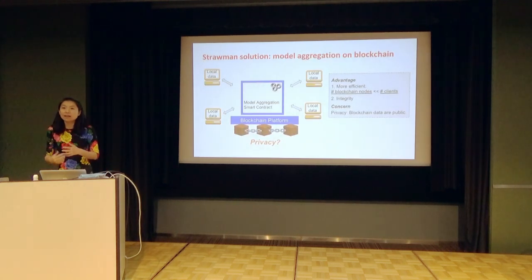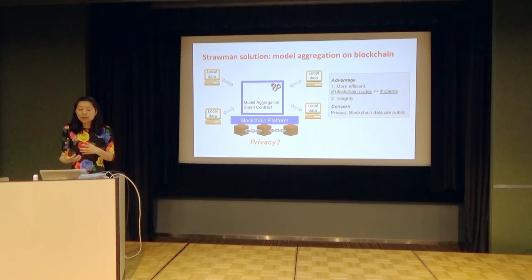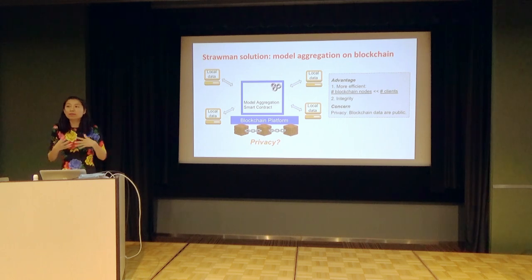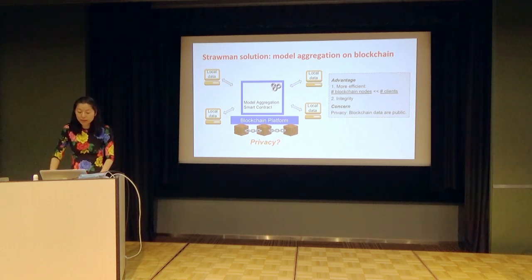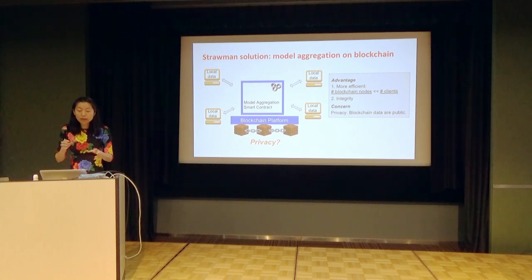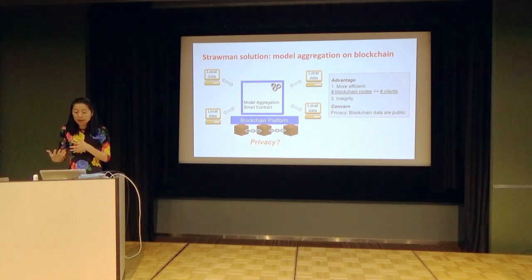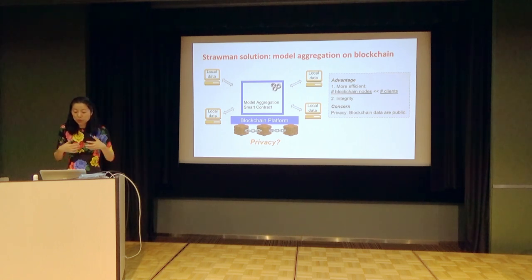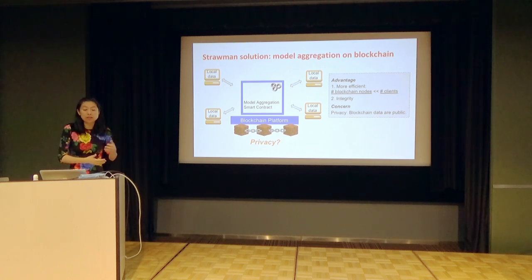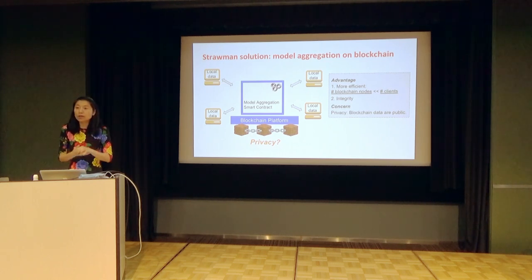Let's take a look at how this approach works. First, let me give you a strawman solution. One way to achieve decentralized federated learning is to use a blockchain smart contract platform to coordinate the different clients for training the machine learning model in a distributed and decentralized way. One strawman approach is that we can simply set up a smart contract on the blockchain platform which performs model aggregation — essentially this model aggregation smart contract will perform what the central server would do normally.